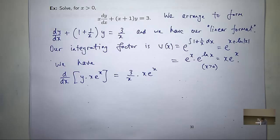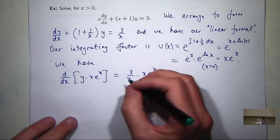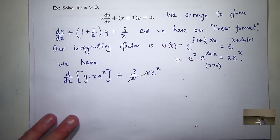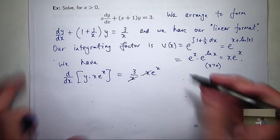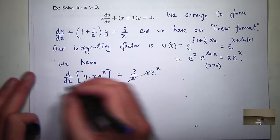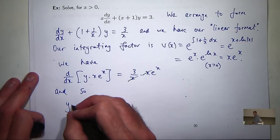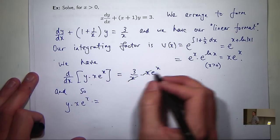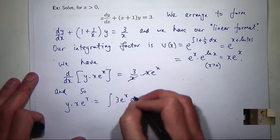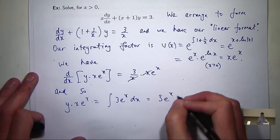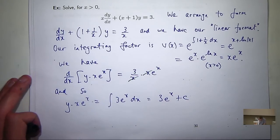So this is going to cancel. Integrate both sides. So if I integrate, I'm integrating 3e to the x dx. So let's just rearrange. So I'm dividing both sides by x e to the x.